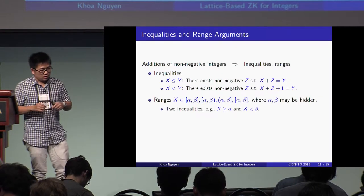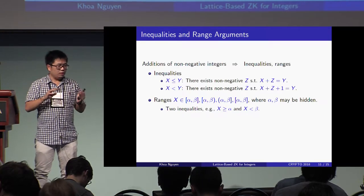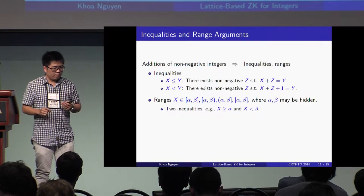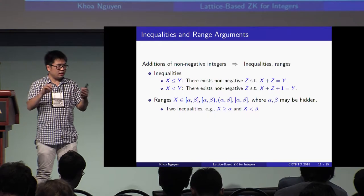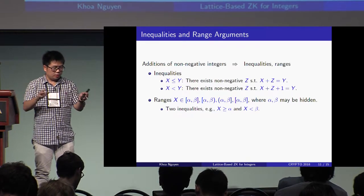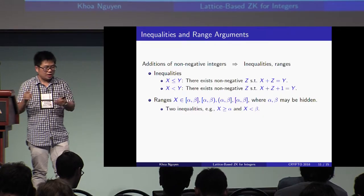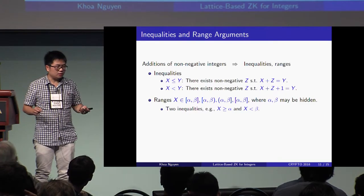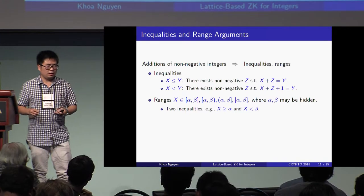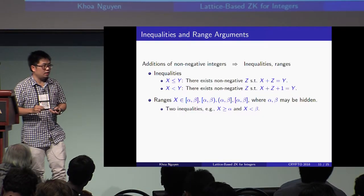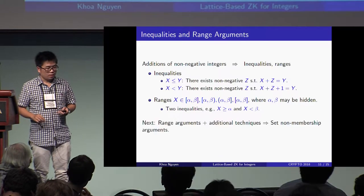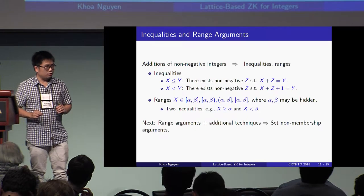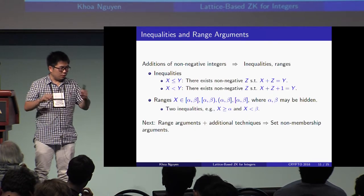If the inequality is strict, we prove there exists a non-negative Z such that X plus Z plus 1 equals Y — so in both cases it reduces to additive relations. Since we can handle inequalities, range proof follows straightforwardly: to prove that committed integer X belongs to range [alpha, beta] — where the interval can be inclusive or not, and alpha, beta can be hidden or public — we reduce the problem to proving two inequalities: X is greater than alpha and X is less than beta. We also use our technique for range arguments, together with some additional techniques, for the set non-membership argument.